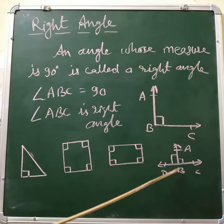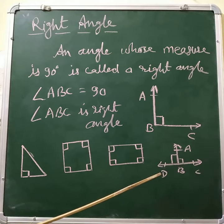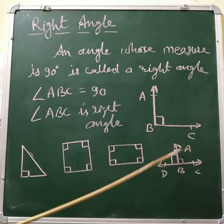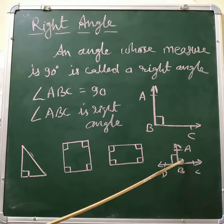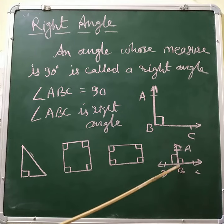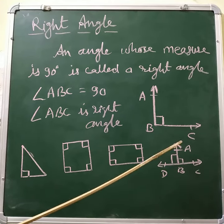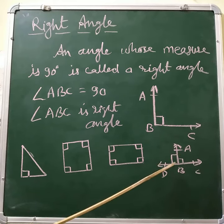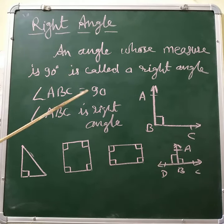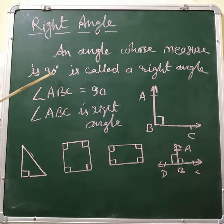So angle ABC is 90 degrees and angle ABD is also 90 degrees. So any angle whose measure is 90 degrees, that angle is called a right angle.